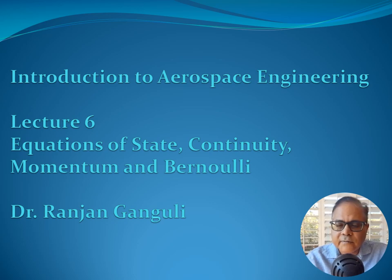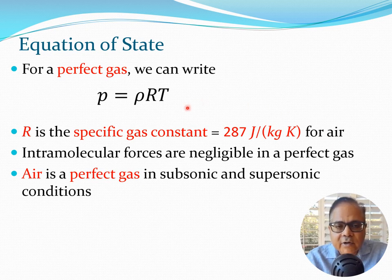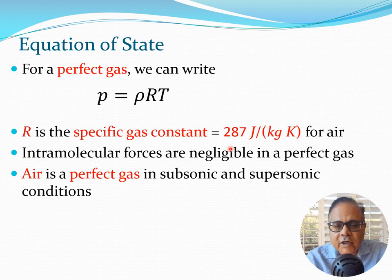I'm Dr. Ranjan Ganguly. Let's start with the equation of state. The equation of state for a perfect gas can be written as p = ρRT, where p is the pressure, ρ is the density, T is the temperature, and R is the specific gas constant. The value of R is 287 J/(kg·K) for air — a value you should generally remember.